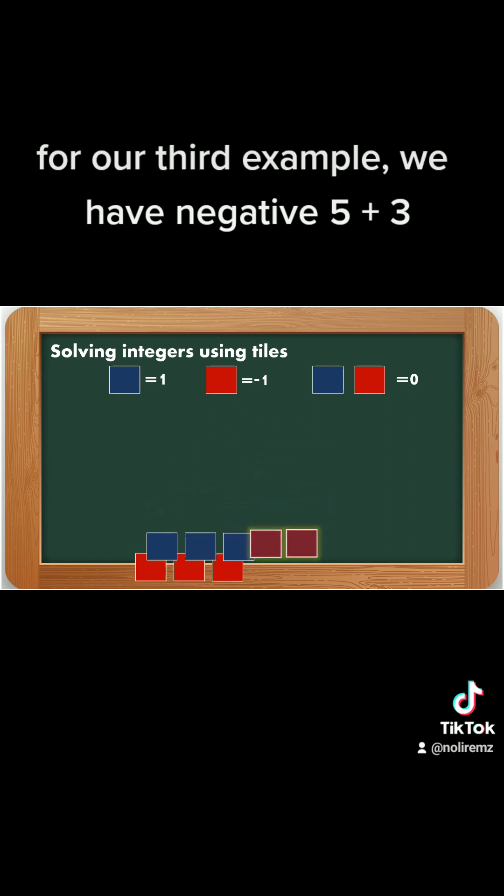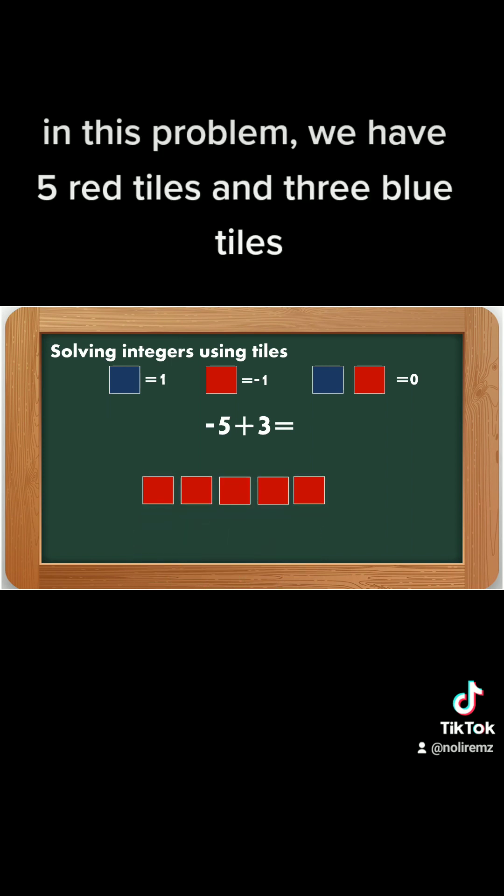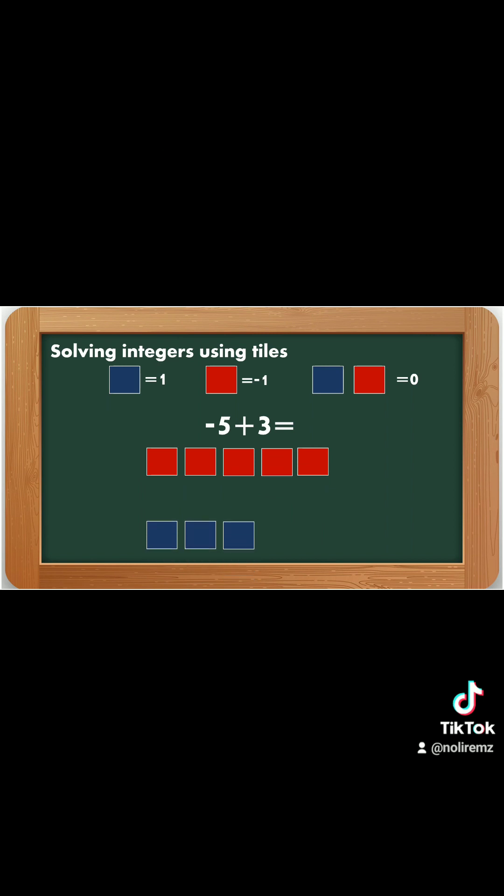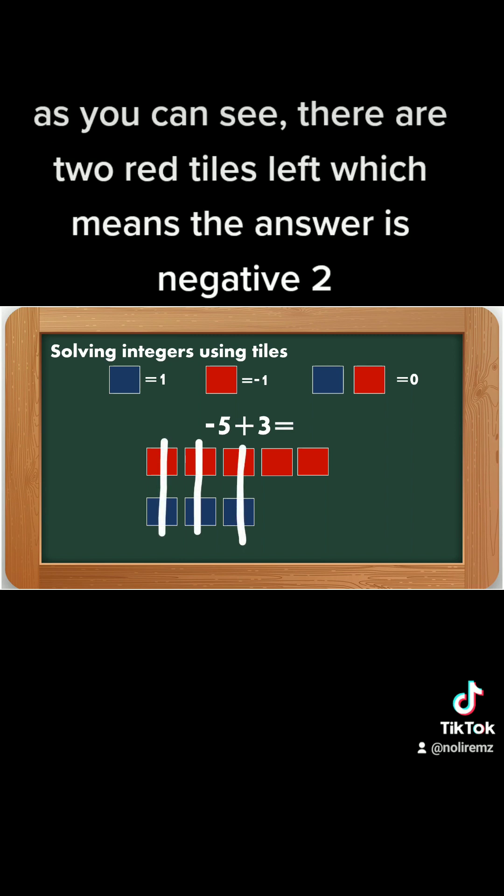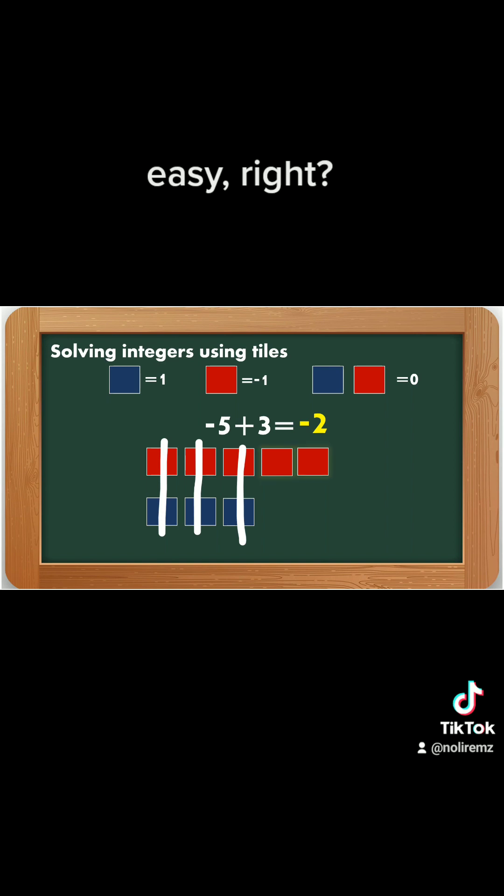For our third example, we have negative 5 plus 3. In this problem, we have 5 red tiles and 3 blue tiles. Once again, combine the red and blue tiles and count the remaining tiles. As you can see, there are 2 red tiles left which means the answer is negative 2. Easy, right?